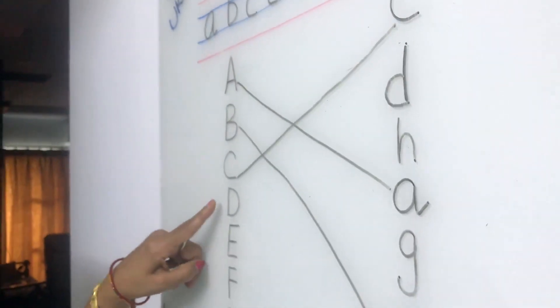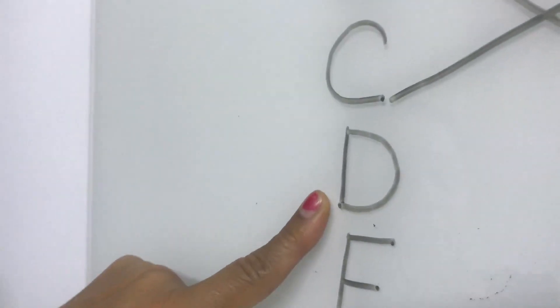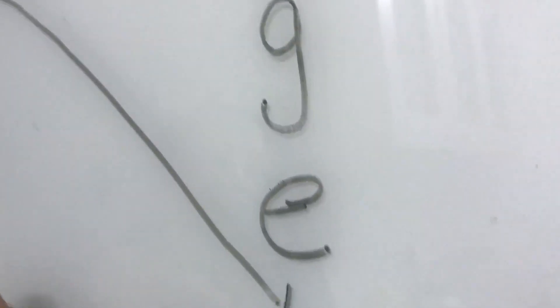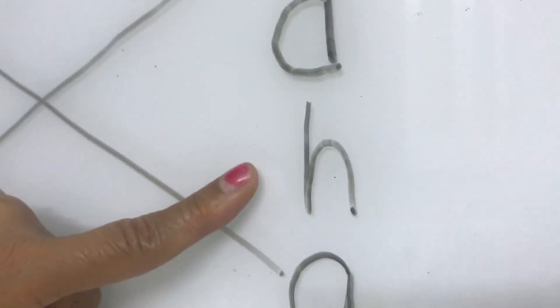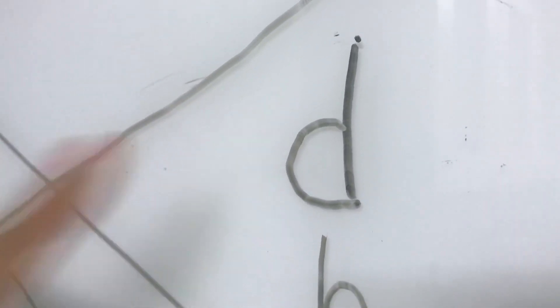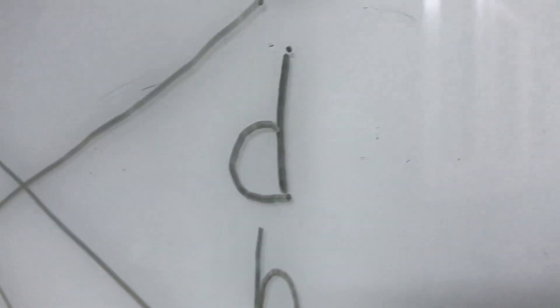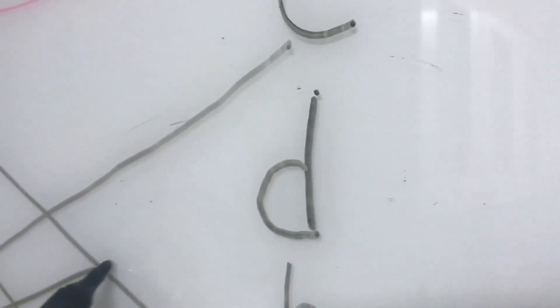Now this is capital D. Where is small D children? Capital D to small D, like this we have to match it.